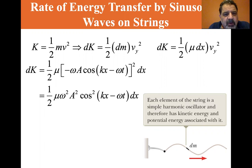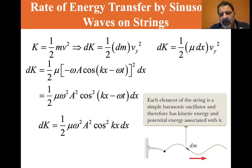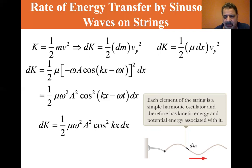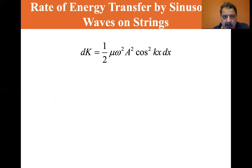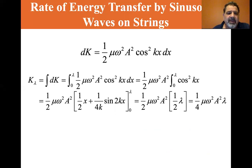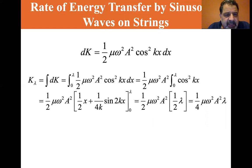That gives dK equals one-half μ ω² A² cos²(kx − ωt) dx. Evaluating at t equals zero, this simplifies to dK equals one-half μ ω² A² cos²(kx) dx. To find the kinetic energy over one full wavelength K_λ, we take the integral of dK from zero to λ.